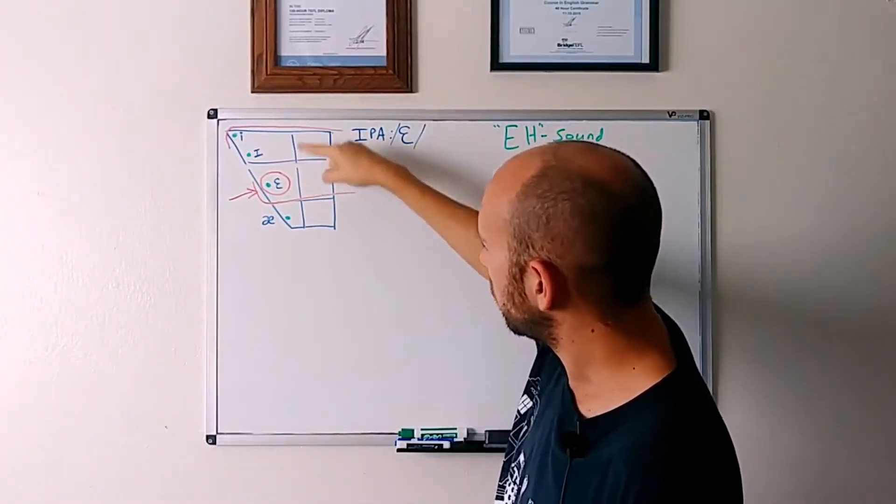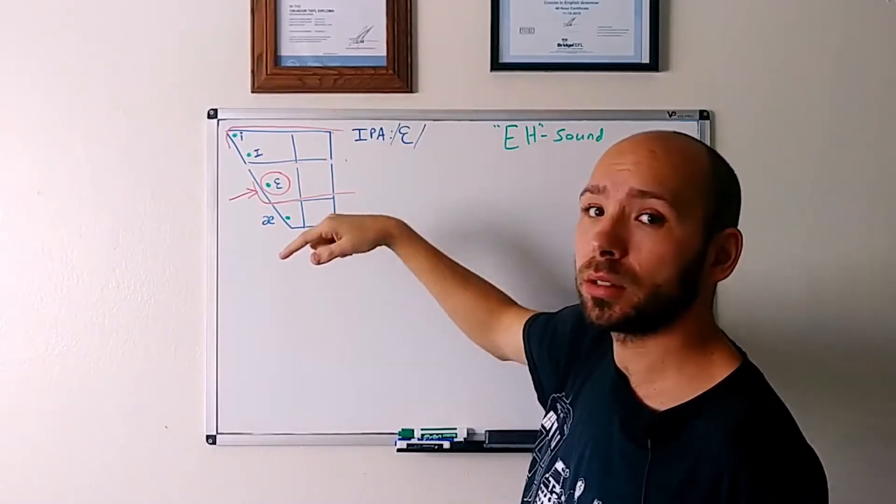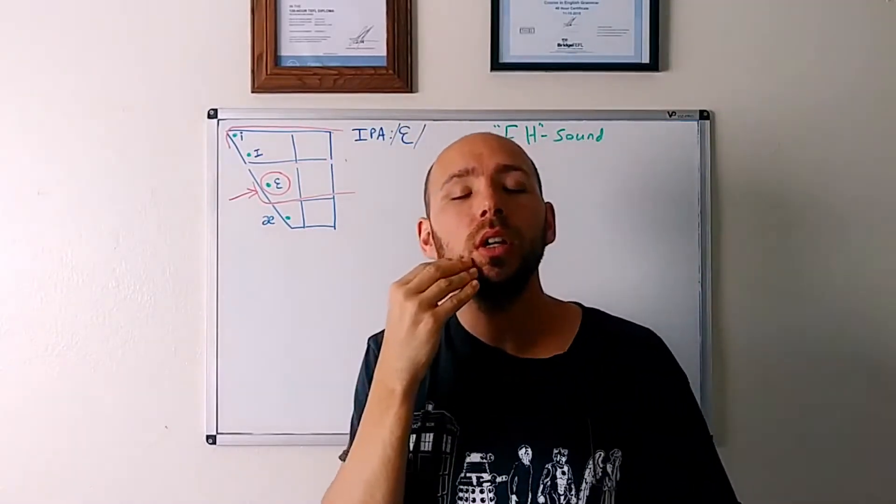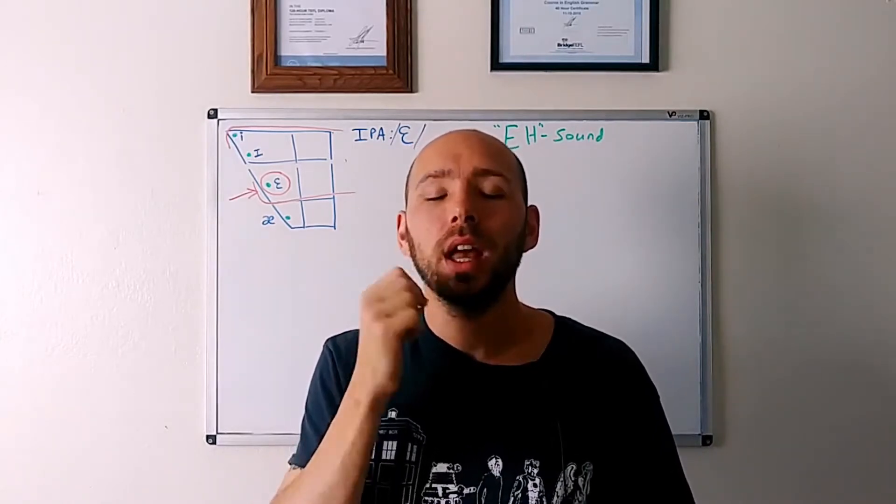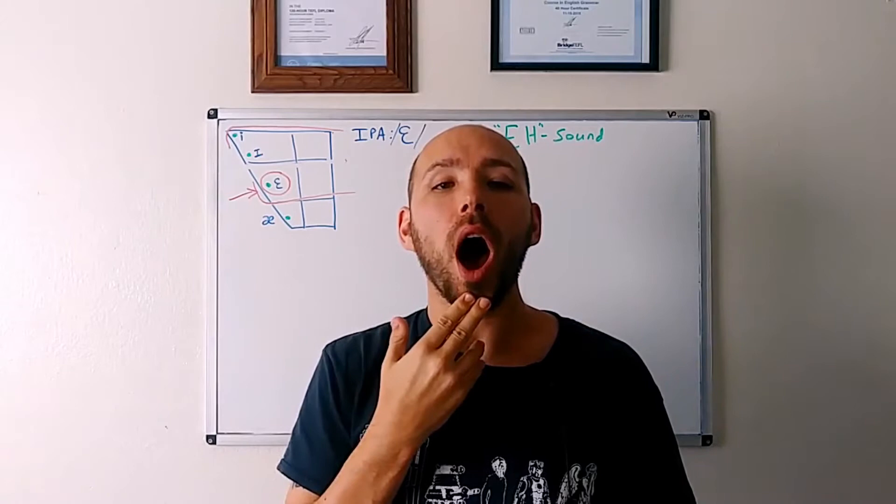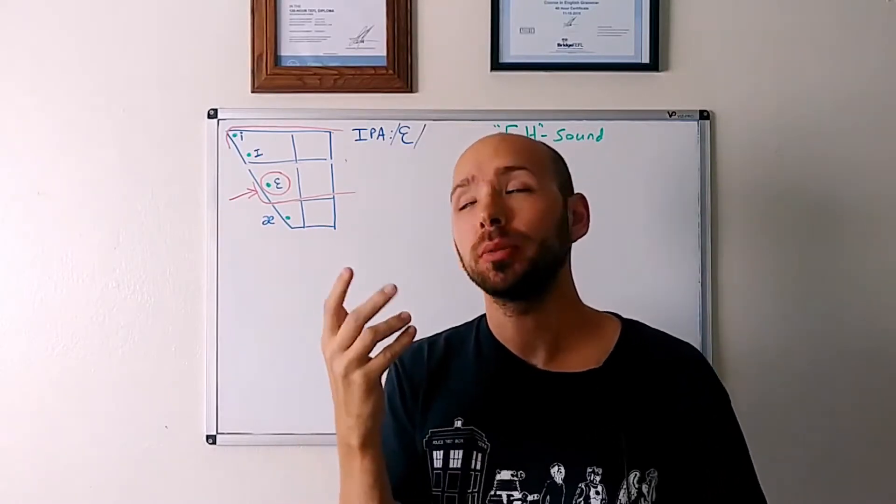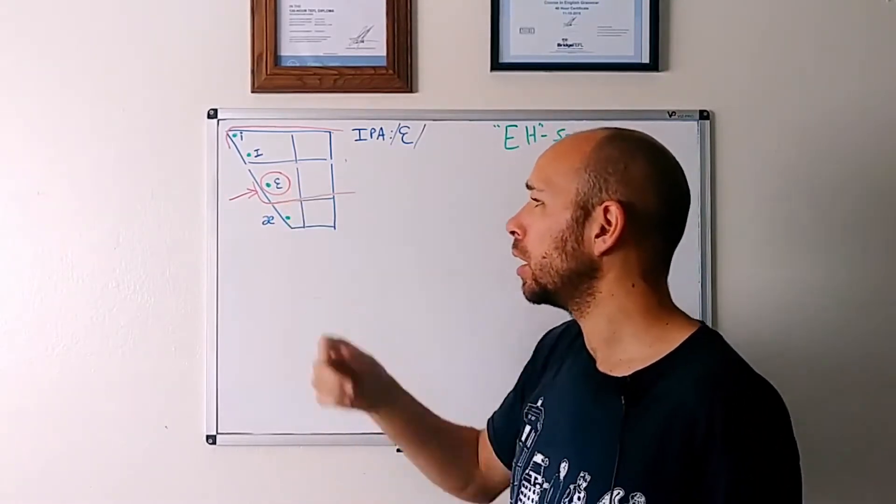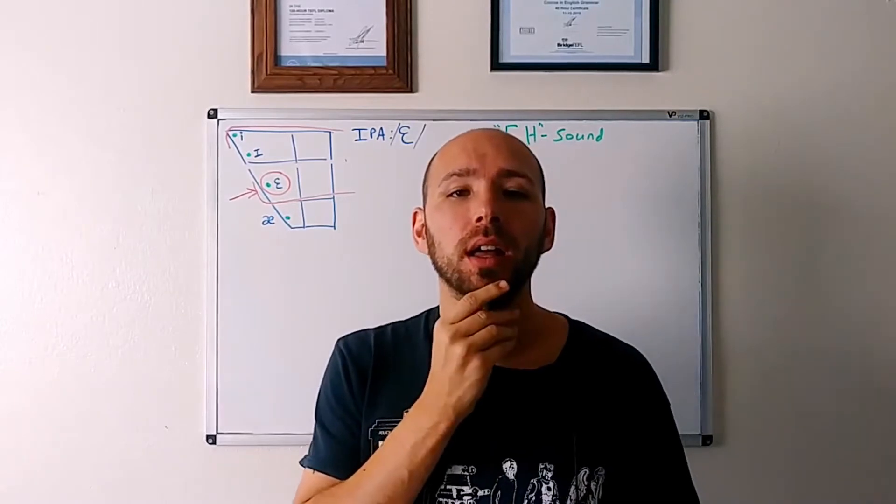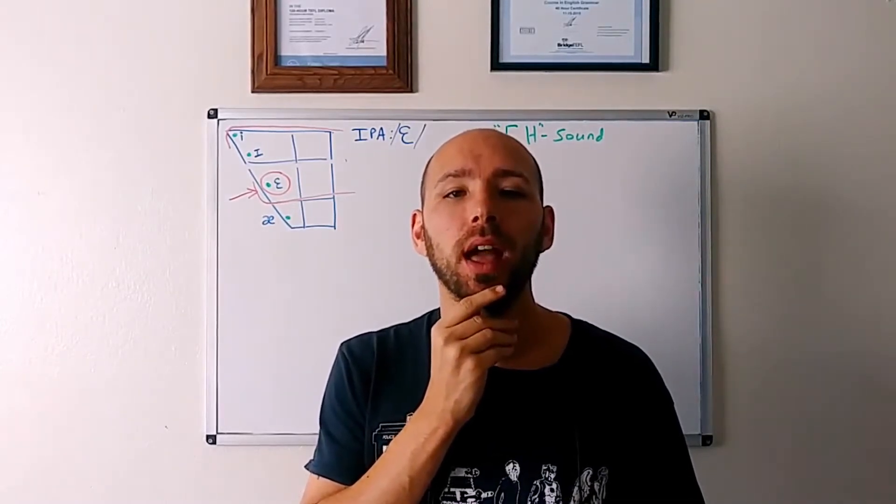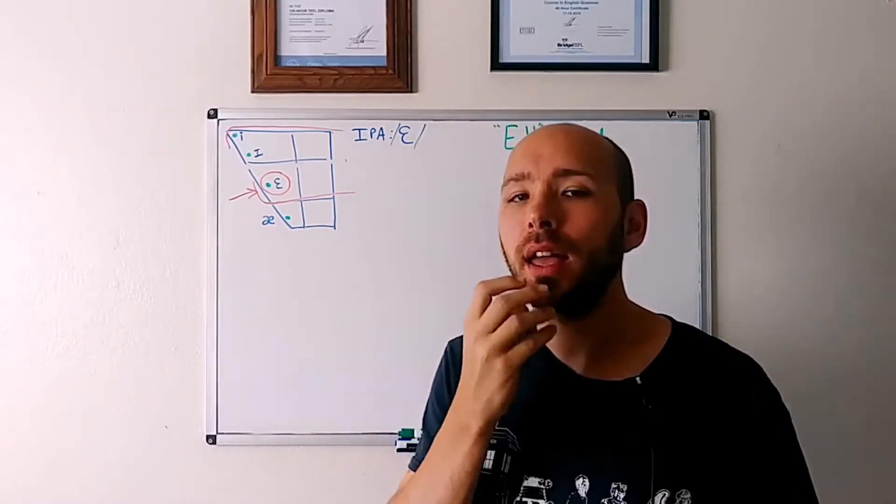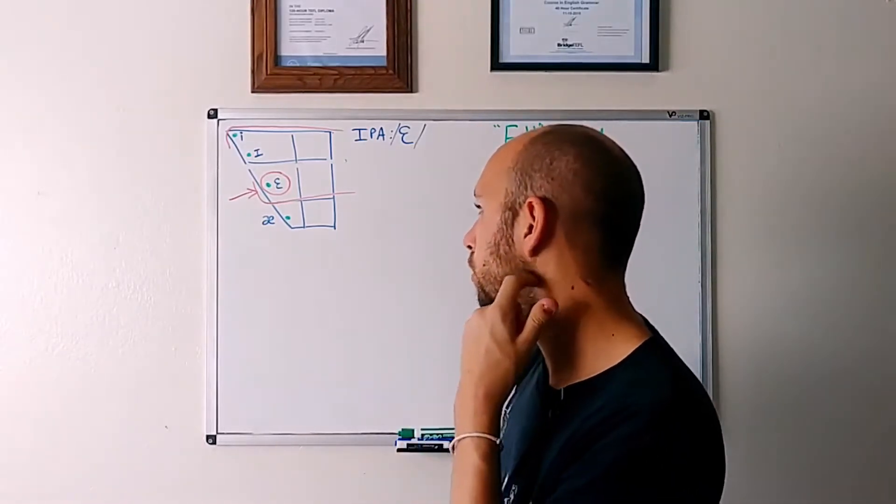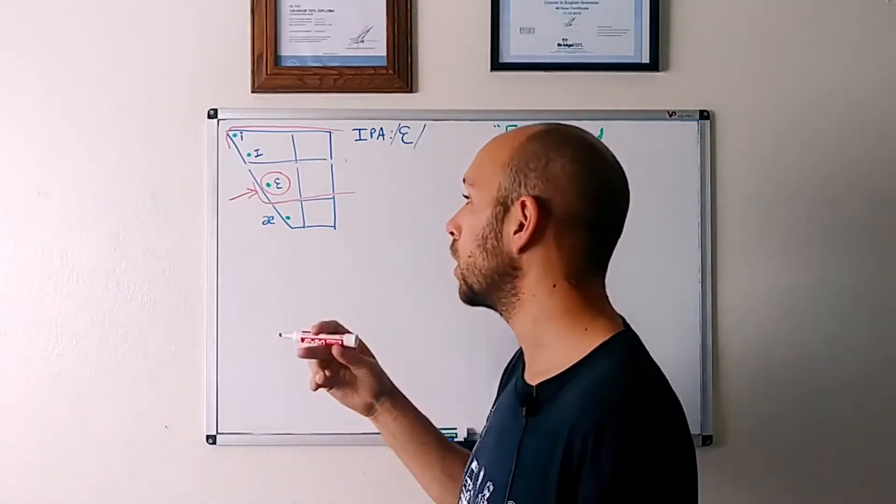And we're actually using the middle, the middle height. So your mouth isn't going to be closed like E, and it's not going to be really open like AH. It's not like that. It's too open. We want it to be more in the middle. So you should be able to see the mouth open a little bit, but not too much.